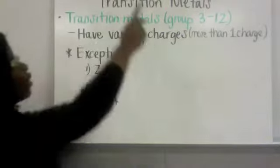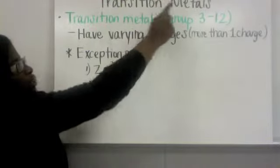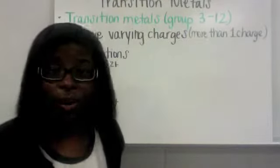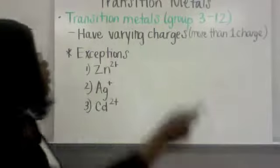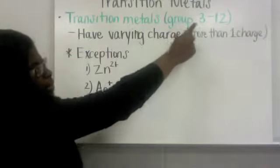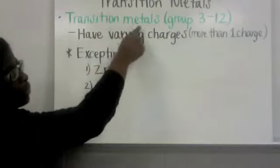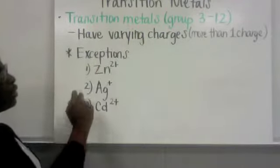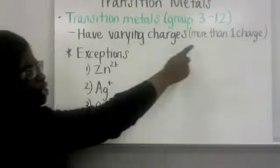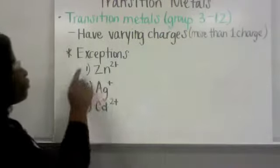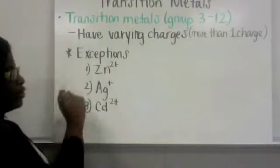When forming compounds with the transition metal you first must know what a transition metal is. Transition metals are groups 3 through 12 on a periodic table. Remember we've been writing the transition metals in the green color. Transition metals have a varying charge, more than one charge. That's what the word varying refers to.